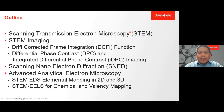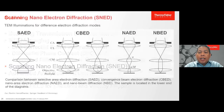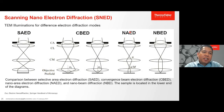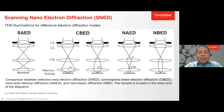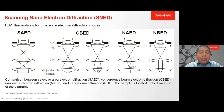Now we move to a different imaging technique known as scanning nano electron diffraction or SNED. There are several TEM illumination modes for electron diffraction. The most common is selective area electron diffraction or SAD, which uses a parallel beam. We also have convergence beam electron diffraction or CBED, which uses convergent electrons to form diffraction patterns and can produce patterns from a smaller area than SAD — but still not suitable for investigating particles smaller than about 50 nanometers.